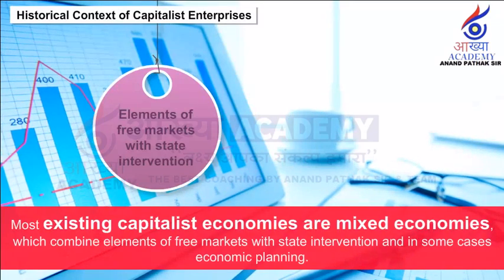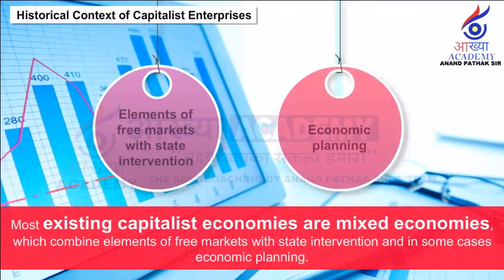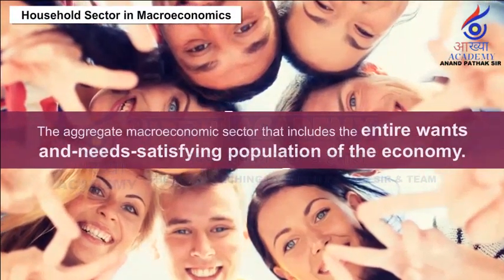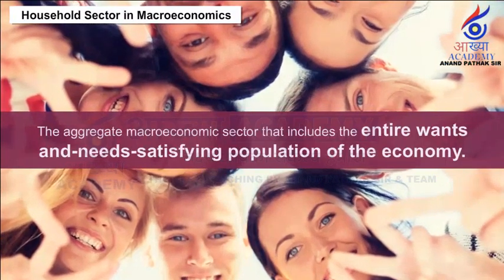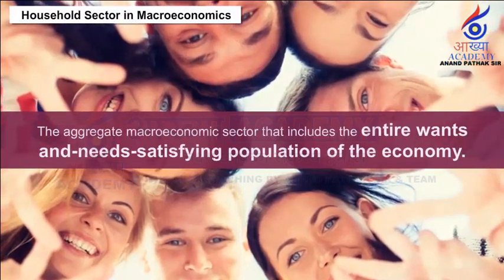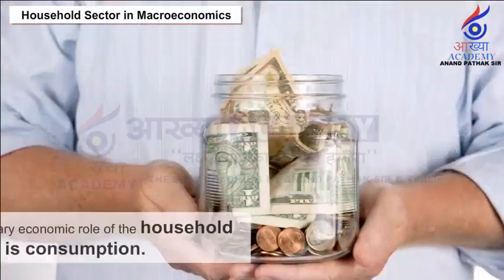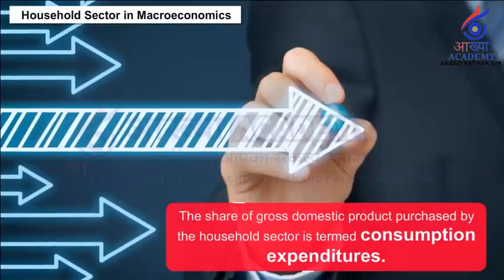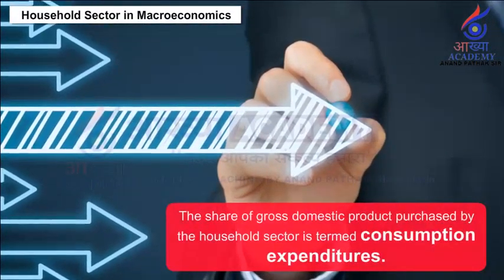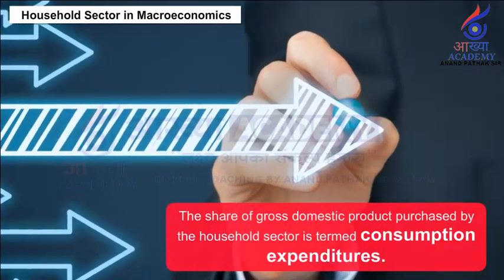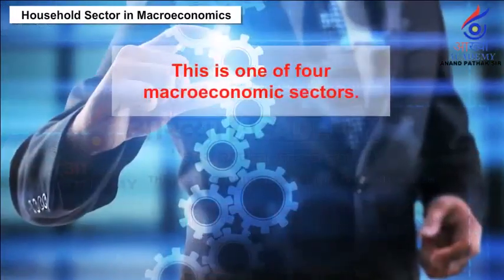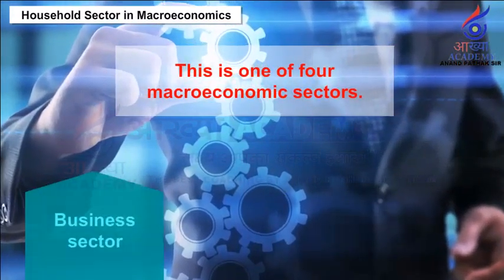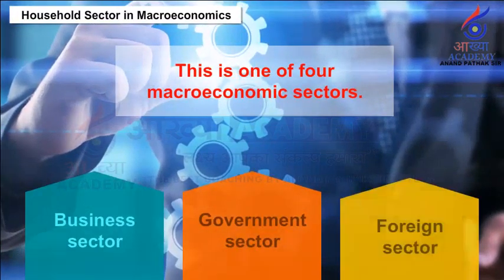Most existing capitalist economies are mixed economies, which combine elements of free markets with state intervention and in some cases economic planning. Household sectors in macroeconomics: the aggregate macroeconomic sector that includes the entire wants and needs satisfying population of the economy. The primary economic role of the household sector is consumption. The share of gross domestic product purchased by the household sector is termed consumption expenditures. This is one of four macroeconomic sectors; the other three are the business sector, government sector and foreign sector.